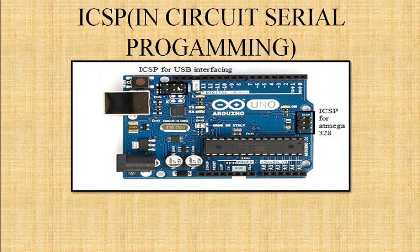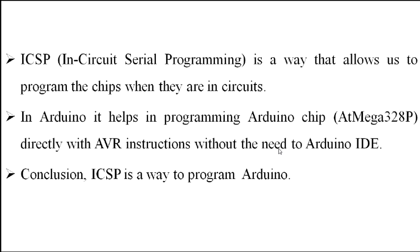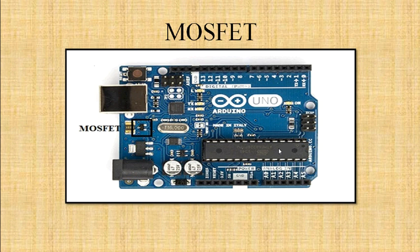The component inside this square is ICSP, which stands for In-Circuit Serial Programming. This is used for USB interface and allows us to program chips when they are in circuit. In Arduino, it helps in programming the Arduino chip directly with AVR instructions without needing the Arduino IDE. In simple words, ICSP is a way to program Arduino.